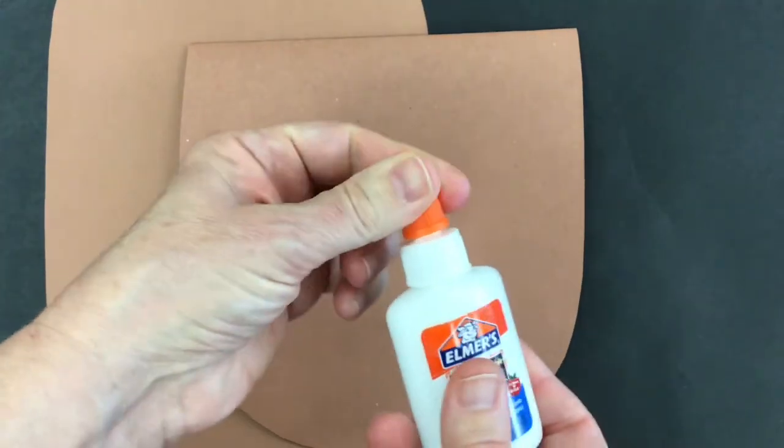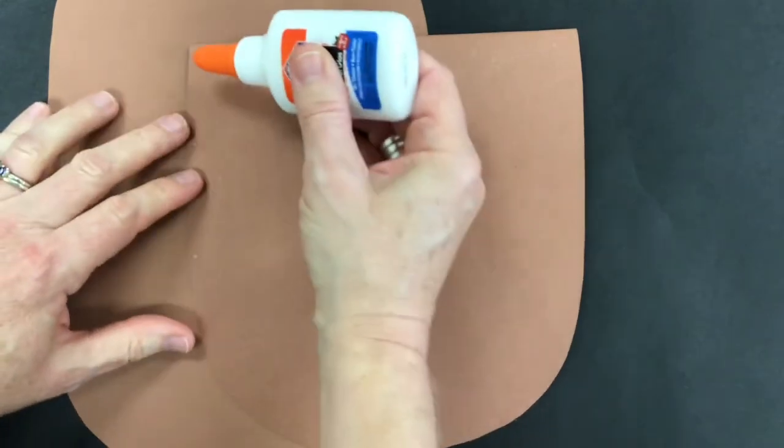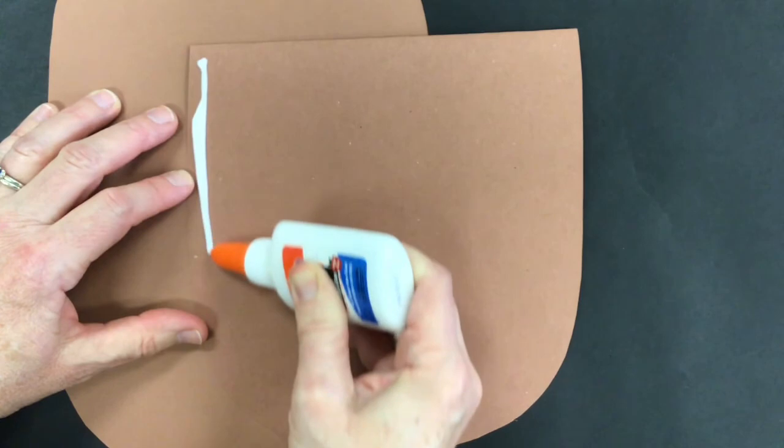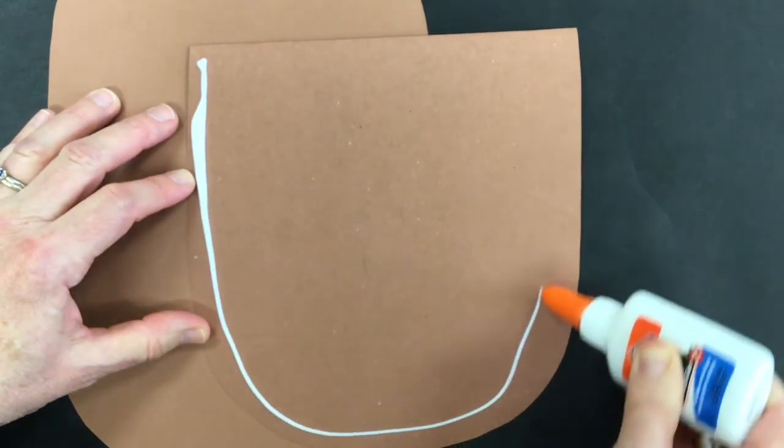You'll need to get your glue and open the orange part, and we're going to make a gigantic U shape on the back of the paper that has a flap.